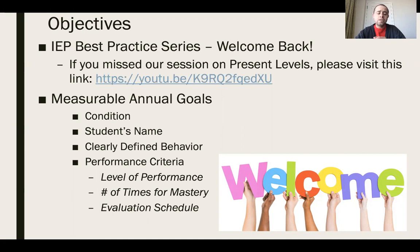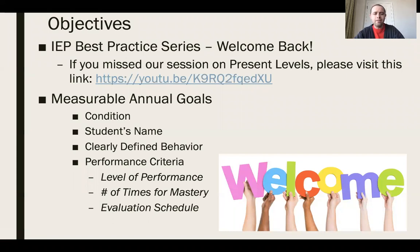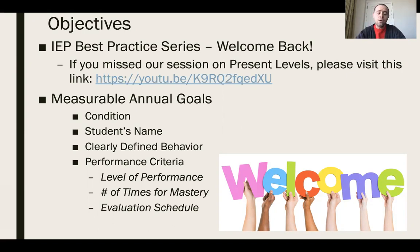In addition to knowing about the present level section, our objective today is to make sure that measurable annual goals have four important pieces in every single IEP: the condition, the student's name, a clearly defined behavior, and the performance criteria. If we include those four things in every measurable annual goal, our IEPs will be not only in compliance but also considered best practice.